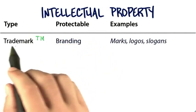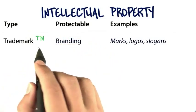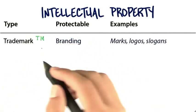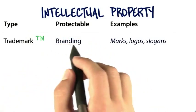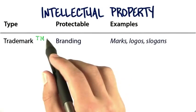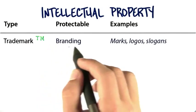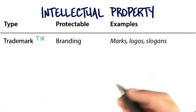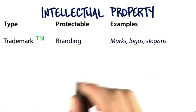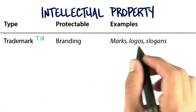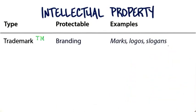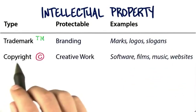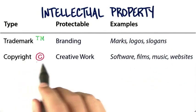One is trademark. Trademark means what you can protect is branding, like the Nike swoosh. Examples could be marks, logos, or slogans.